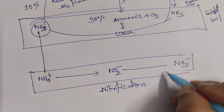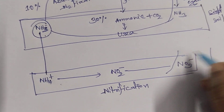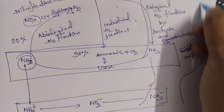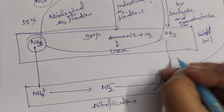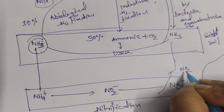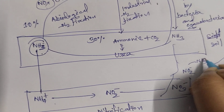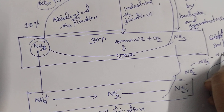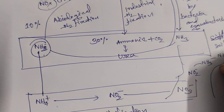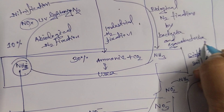When a plant takes up nitrate, it converts it into nitrite, then ammonium, and then into amino acids. These amino acids are converted into protein.